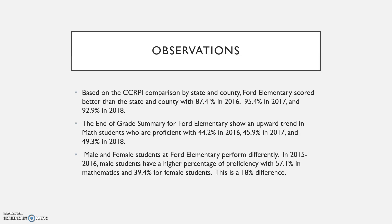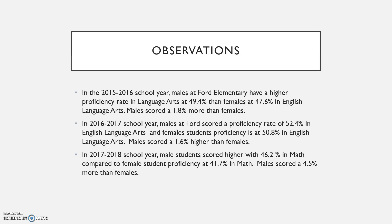Male and female students at Ford perform differently. In 2015-2016, male students had a higher percentage of math proficiency at 57.1 percent compared to 39.4 percent for females — an 18 percent difference. In Language Arts, males scored 49.4 percent and females 47.6 percent, a 1.8 percent difference. A similar trend continued across 2017 and 2018, where males scored 46.2 percent in math compared to female proficiency at 41.7 percent.